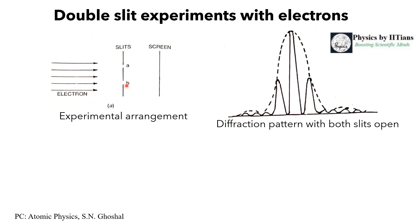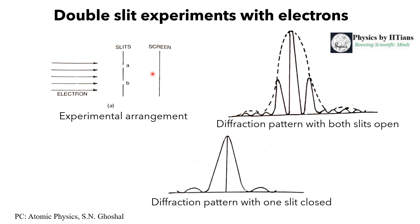Now, what happens if we close one slit — say slit B — and let the beam of electrons pass only through slit A? According to classical mechanics, we would observe only one spot corresponding to slit A. But interestingly, we also observe a diffraction pattern when one slit is closed. Each electron behaves like a wave; passing through slit A, they interfere with each other and produce a diffraction pattern instead of a single spot. This is a truly quantum mechanical phenomenon that cannot be explained by classical mechanics.